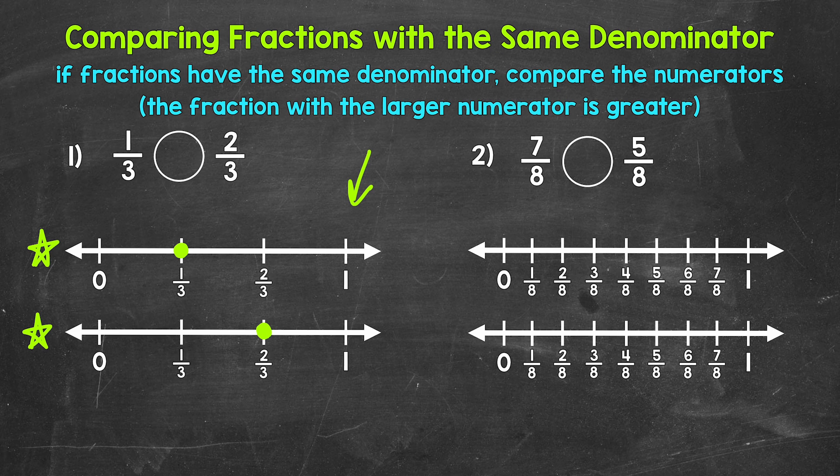The number lines do help us see this, but also keep in mind, since the fractions have the same denominator, three, all we have to do is compare the numerators. Two is greater than one. So two-thirds is greater than one-third.